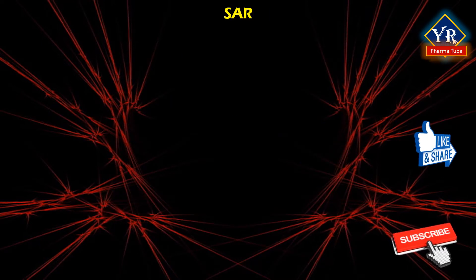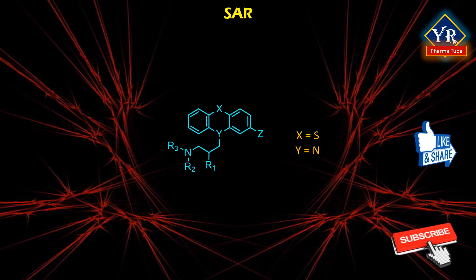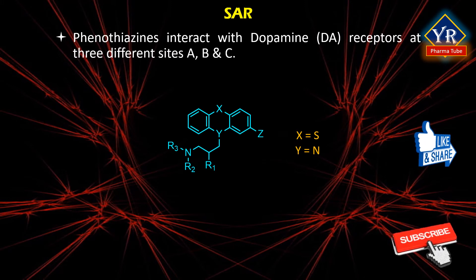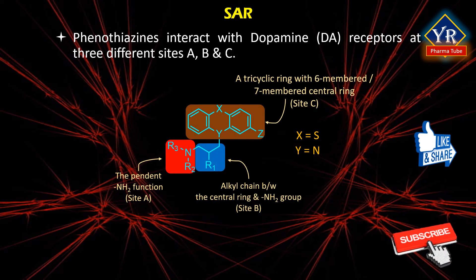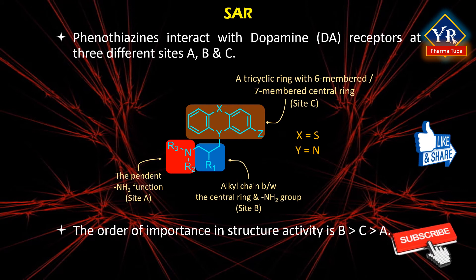Structure-activity relationships of phenothiazines. Phenothiazine has a tricyclic ring system in which two benzene rings are linked by sulfur and a nitrogen atom. Unsubstituted phenothiazine has no activity at all but has good lipophilicity for brain penetration. It is postulated that phenothiazines interact with dopamine receptors, especially D2 receptors in the brain, at three distinct sites of the structure divided into site A, site B, and site C as shown in the structure. The order of importance in terms of structure-activity is B, C, and then A.